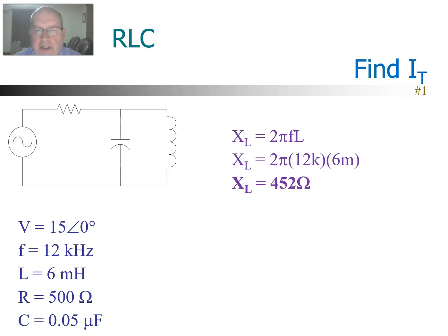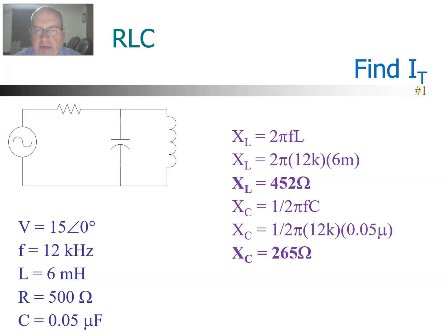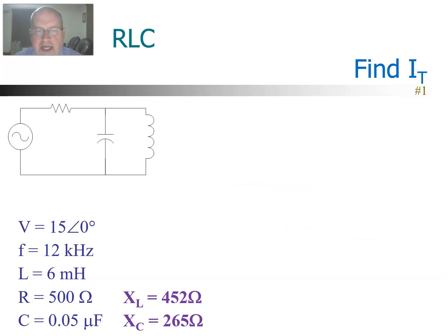Now we do the same thing with X of C. X of C is 1 over 2π F C. Plug our numbers in, and we get X of C = 265 ohms. Now we're going to put those numbers aside and use those in order to calculate the total Z.